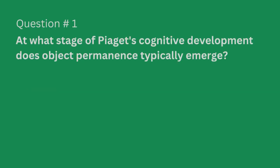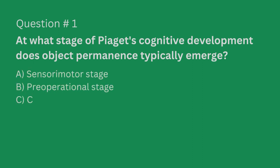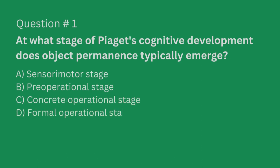Question number one. At what stage of Piaget's cognitive development does object permanence typically emerge? A. Sensorimotor stage. B. Pre-operational stage. C. Concrete operational stage. Or D. Formal operational stage.